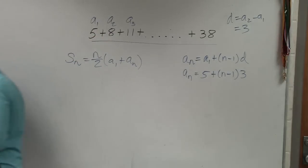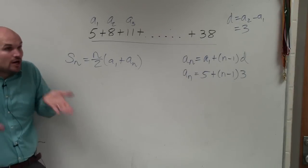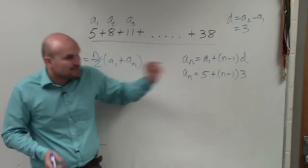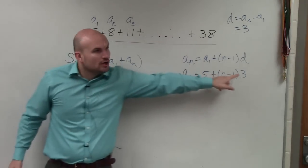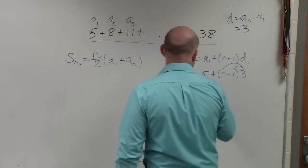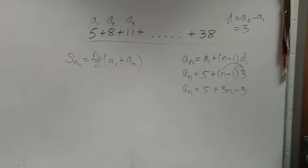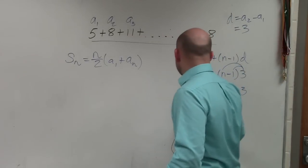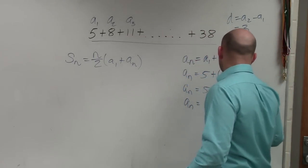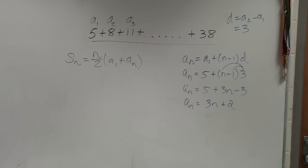Now, I don't know n. n tells you the number of terms in this sequence. We don't know n. But we know a sub 1, which is the first term, and we know the difference. So now what I'm going to do is apply distributive property. a_n equals 5 plus 3n minus 3. Now, I combine like terms. 5 minus 3 is 2. So I can say a_n equals 3n plus 2. Anybody have any questions on how I got to that point so far? No.